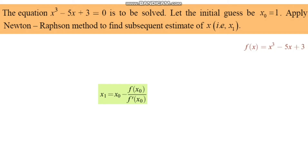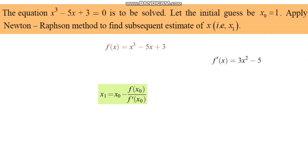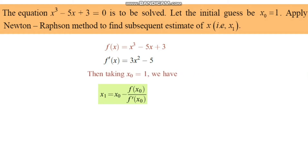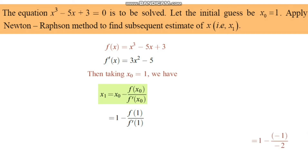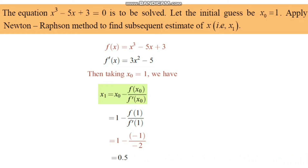We have f(x) = x³ minus 5x plus 3, and f'(x) = 3x² minus 5. Given x₀ = 1, we substitute to get f(x₀) and f'(x₀). After calculation: x₁ = 1 minus (-2)/(-2) = 1 minus 0.5 = 0.5.